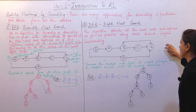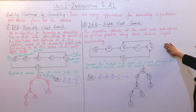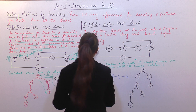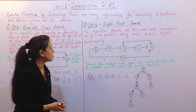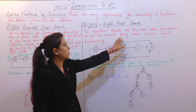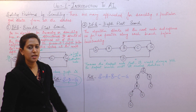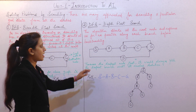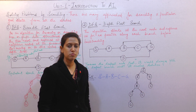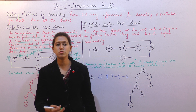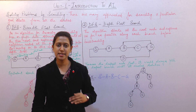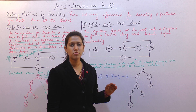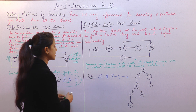Now coming towards the DFS technique. In DFS, the algorithm starts at the root node and explores all the nodes as far as possible along each branch before backtracking. DFS uses backtracking because it starts at the root node, goes directly to the deepest level of the tree, and then backtracks to explore all remaining nodes.